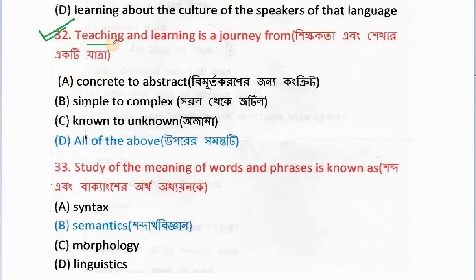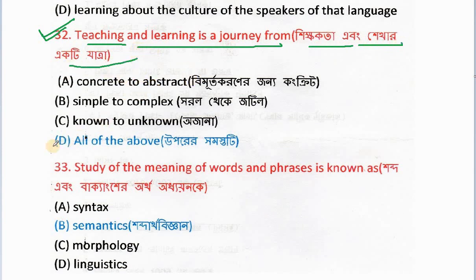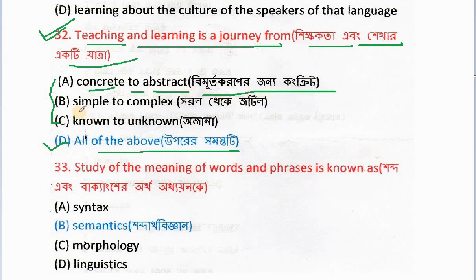Number 32: Teaching and learning is a journey from... All of the above. The right answer is concrete to abstract, and simple to complex.